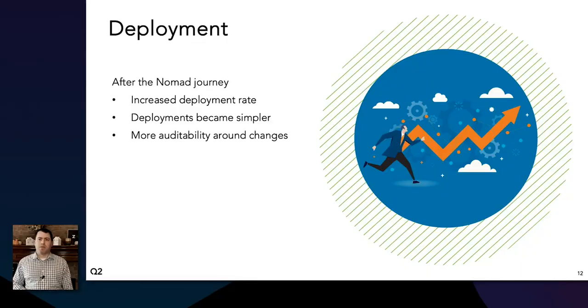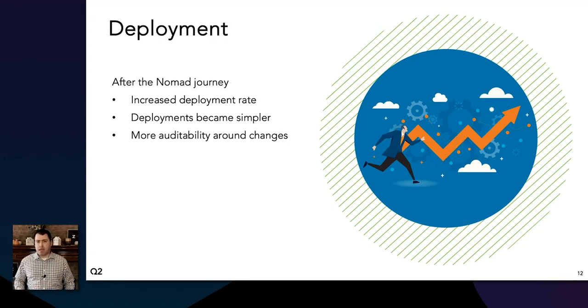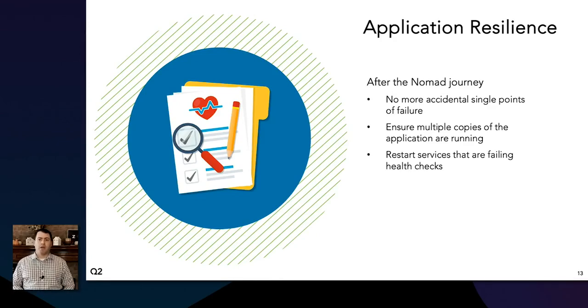Let's talk about some of the outcomes we've been able to achieve with Nomad. We've been able to increase deployment rates across the board. Since deployments are much simpler, it's become much easier to stand up applications, which has allowed for better testing and experimentation and easier changes in general. Deployments and changes have a better history for auditing purposes. We also gained a lot of extra resiliency for our production stacks by preventing single points of failure and ensuring multiple copies are running at the same time.